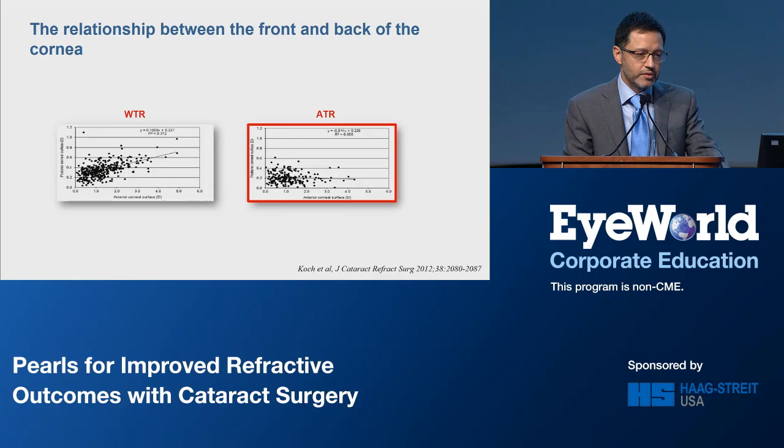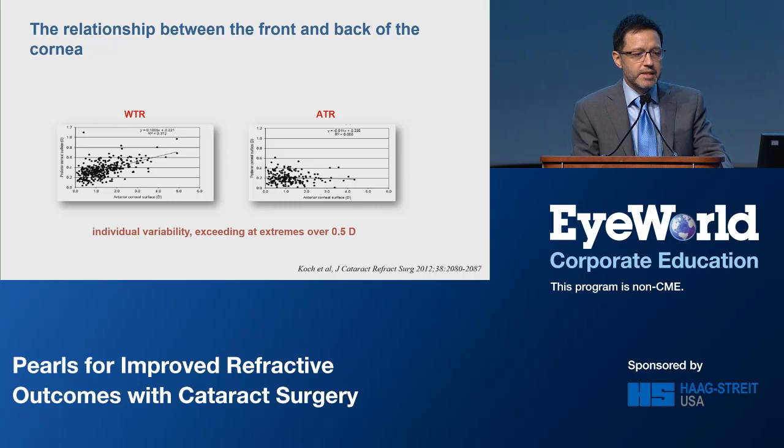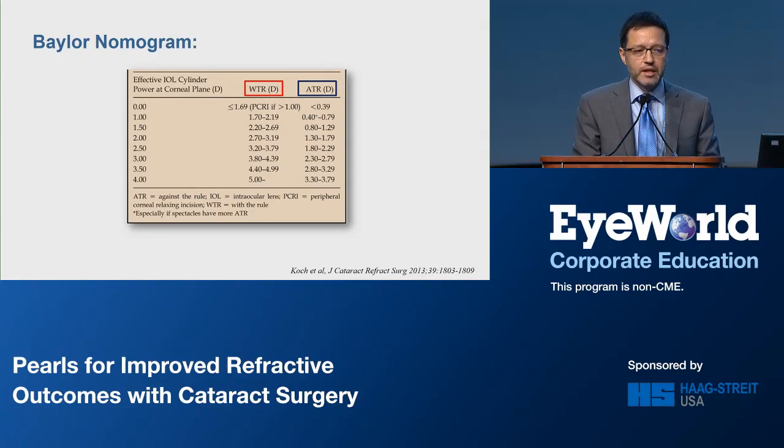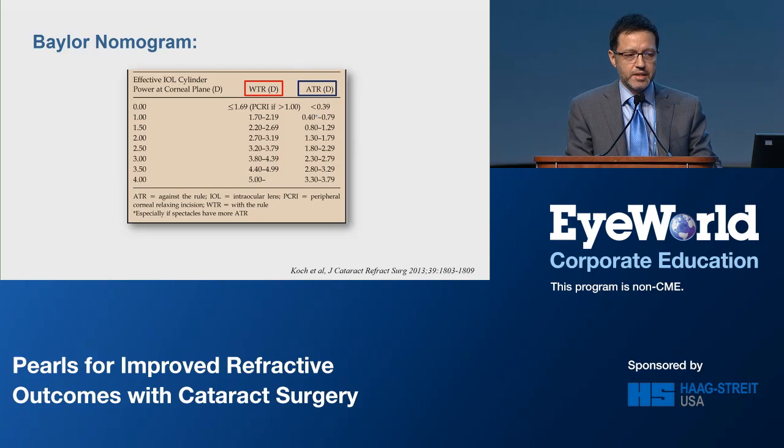Another finding was that with with-the-rule eyes, the more curvature in the front was correlated to more curvature in the back, whereas for against-the-rule eyes, there was no correlation between the magnitude of the front and back surfaces of the cornea. He also found there was much individual variability, exceeding at extremes over 0.5 diopters. Based on their findings, they developed a Barrett nomogram to address the posterior corneal astigmatism effect. Since then, a great deal of work has been done to refine our understanding and find more accurate calculations for daily practice. Basically, two approaches have been taken.